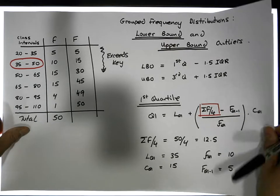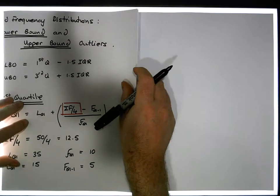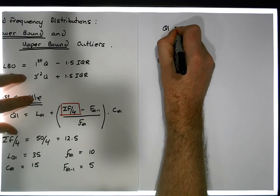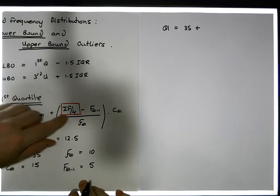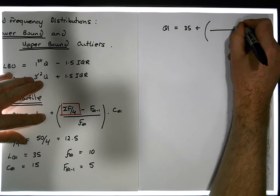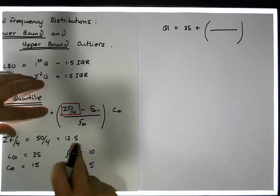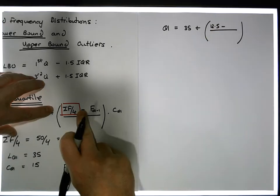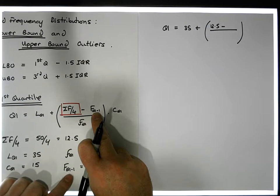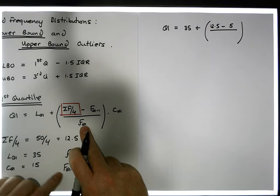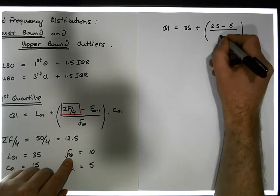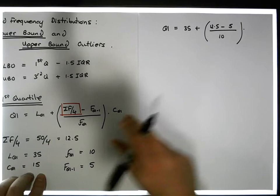So in our situation, taking our values again, we end up with Q1, our first quartile, equal to the lower bound which is 25, plus sigma f over 4 — and don't forget this is a fractional amount — so sigma f over 4 is 12.5, minus capital F of Q1 minus 1, which is the cumulative frequency of the class before the quartile class, which is 5, all relative to small f of Q1 which is 10, multiplied by the class width of 15.